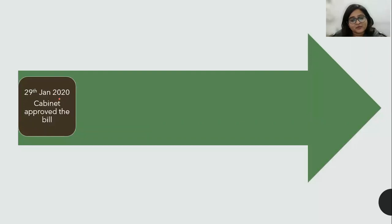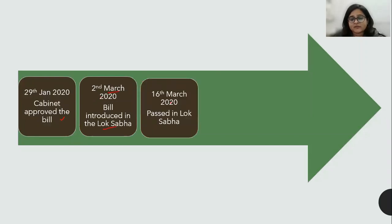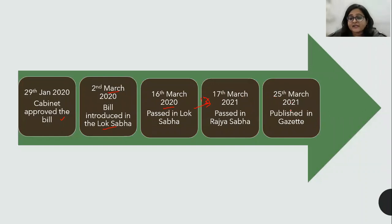When a law is to be introduced or an amendment has to happen, first the cabinet has to approve the bill. This happened in January 2020 when the cabinet approved the bill. In March, the bill was introduced in the Lok Sabha and was quickly passed in around two weeks, but then COVID struck, causing a one-year delay in getting it passed in the Rajya Sabha. Once passed in both houses, an official notification is published in the Gazette of India.